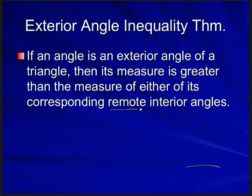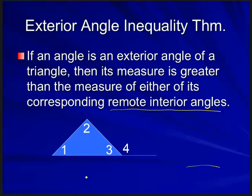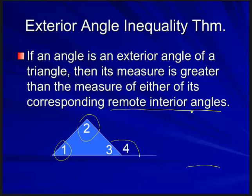You have to remember what a remote interior angle is. Looking at a figure with angles one, two, three, and four — which is our exterior angle? Exterior means outside the triangle, so it's going to be angle four. Out of angles one, two, and three, two of them are remote interior. Remote means away from, so angles one and two are farthest away from our exterior angle — those are our remote interior angles.